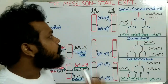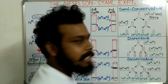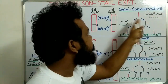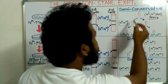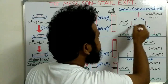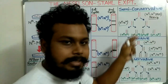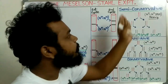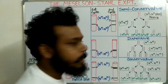In the semi-conservative model, this is the parental DNA. At first, the two parental DNA strands get separated from each other, and each of those parental DNA strands acts as a template to make a new DNA strand. So the new DNA molecule contains one parental DNA strand and one new DNA strand.